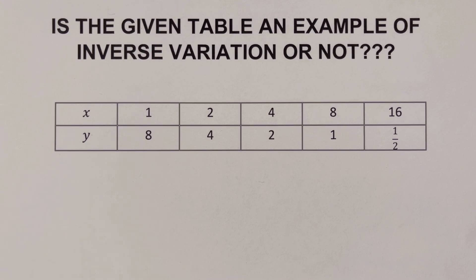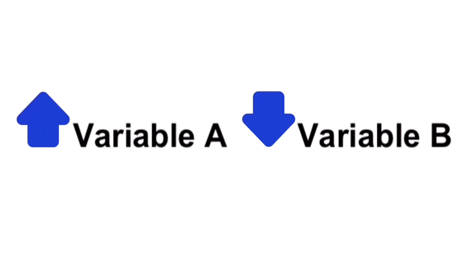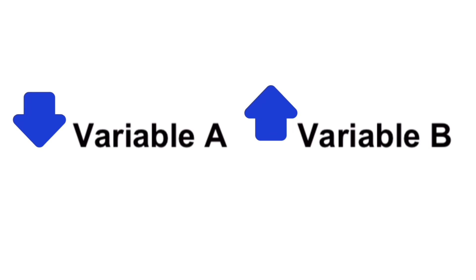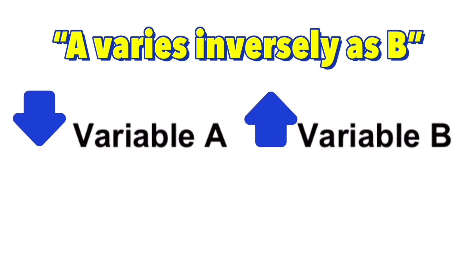Before we jump into the examples, let's have a review on the basic information of inverse variation. For inverse variation, if variable A increases, variable B will decrease — the arrows go in opposite directions. On the other hand, if variable A decreases, then variable B will increase. That is what we mean by inverse variation, and we say that A varies inversely as B, or A is inversely proportional to B.